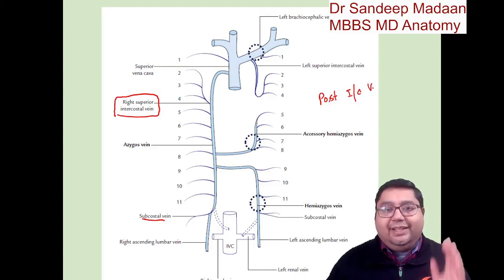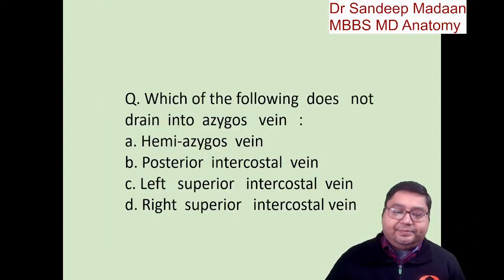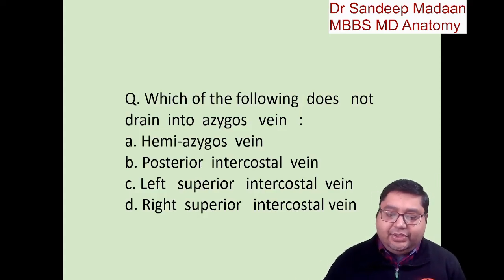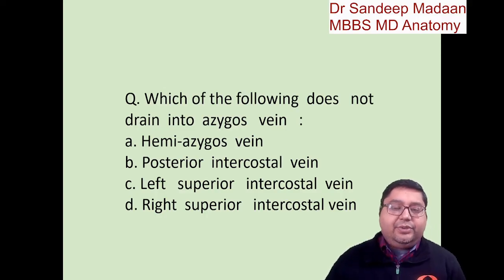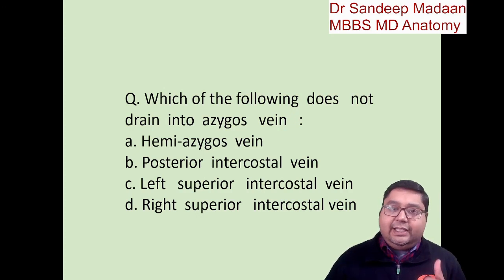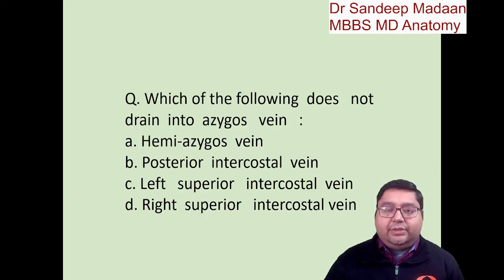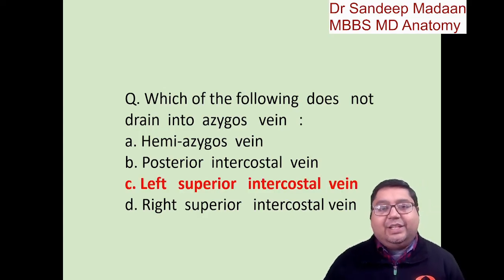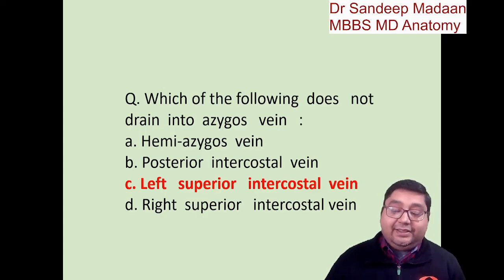Let us take one question: which of the following does not drain into the azygous vein? The hemi-azygous vein crosses the midline and goes into the azygous. Posterior intercostal veins — many of them do. Regarding the superior intercostal vein, the left superior intercostal vein is the answer, because it drains into the left brachiocephalic vein, not into the azygous.